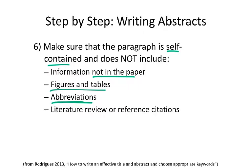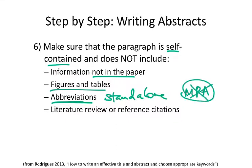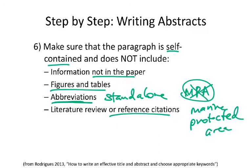Abbreviations are a big one. Since the abstract is supposed to be self-contained and standalone — similar to what we talked about with figure captions where you define every abbreviation — in the abstract, write everything out instead of using abbreviations. For instance, instead of 'MPAs' you would write out 'marine protected areas.' Also, don't include any references or citations in the abstract itself; those are fleshed out in the main parts of the paper.